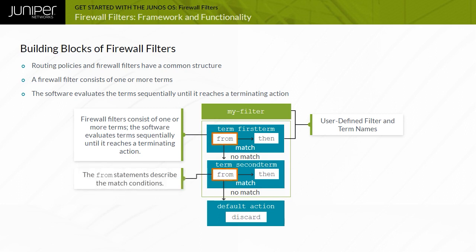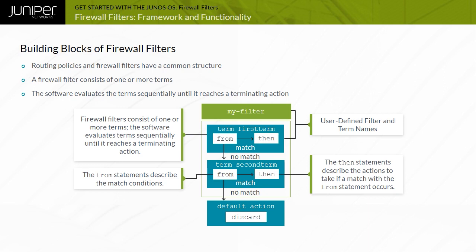A term contains zero or more match conditions and one or more actions. The from statements describe match conditions, and the then statements describe the actions to be taken if a match occurs. If all match conditions are true, Junos OS takes the specified action. If no match conditions are specified, all traffic matches the firewall filter term.